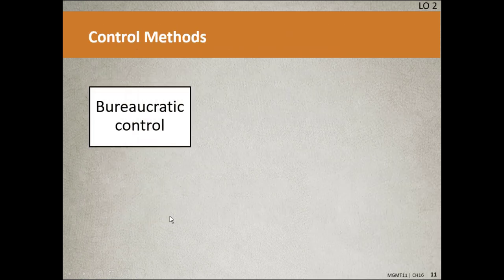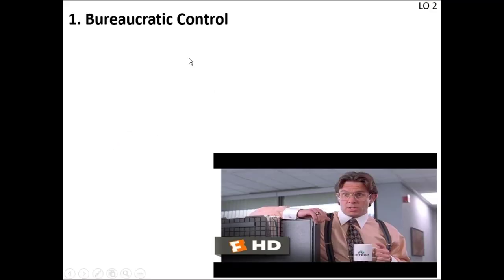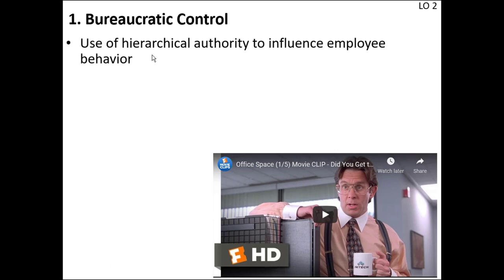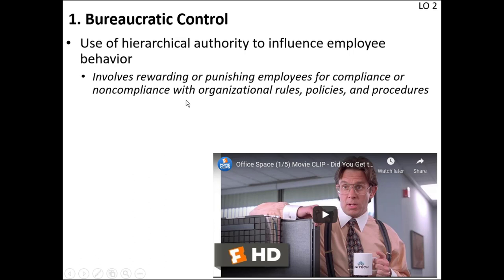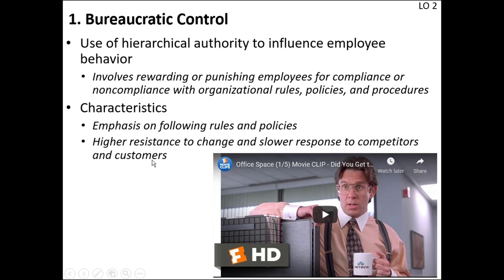Now let's look at control methods — there are five of them. Let's start with bureaucratic control. Remember bureaucracy from chapters one and two — the German sociologist who came up with it? Bureaucratic control uses hierarchical authority to influence employee behavior and involves rewarding or punishing employees for compliance or non-compliance with rules, policies, and procedures. Its characteristics are an emphasis on following rules and policies, higher resistance to change, and slow response to competitors and customers. Here's a clip from the classic movie Office Space that illustrates this perfectly.